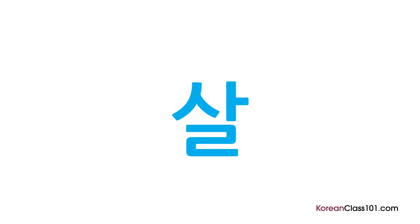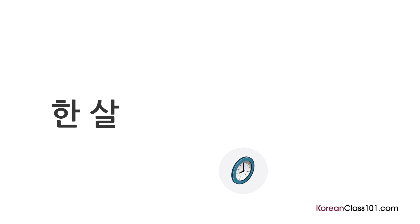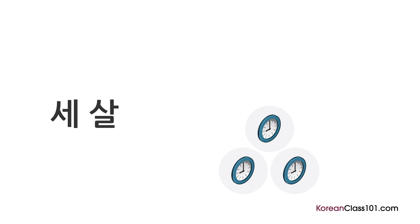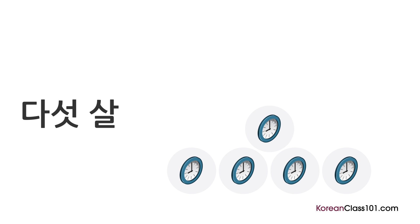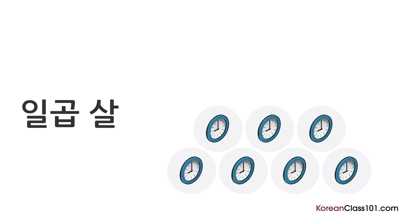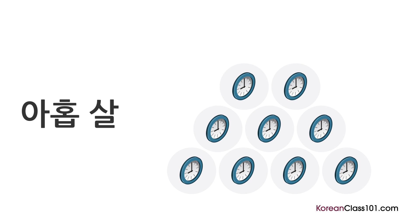Let's count from 1 to 10 with this counter: 한 살, 두 살, 세 살, 네 살, 다섯 살, 여섯 살, 일곱 살, 여덟 살, 아홉 살, 열 살.